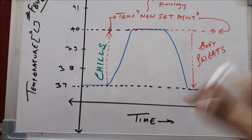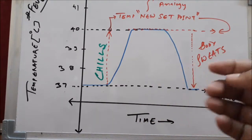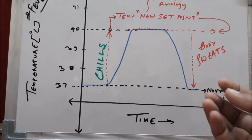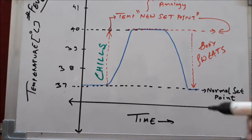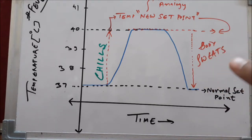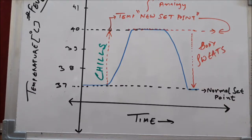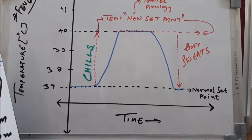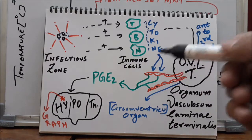Vasodilation also plays a role: increased blood flow in peripheral vasculature allows the body to radiate out heat by radiation, convection, or conduction. This is the basic comprehensive overview of fever. Now let us see what actually happens inside the body.